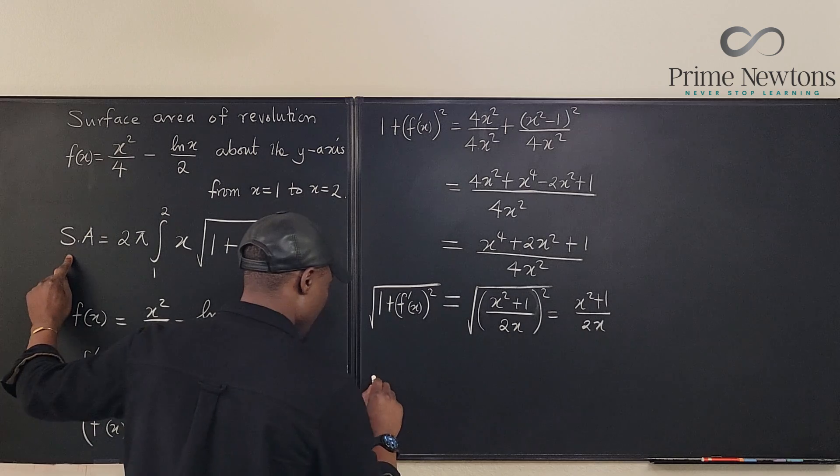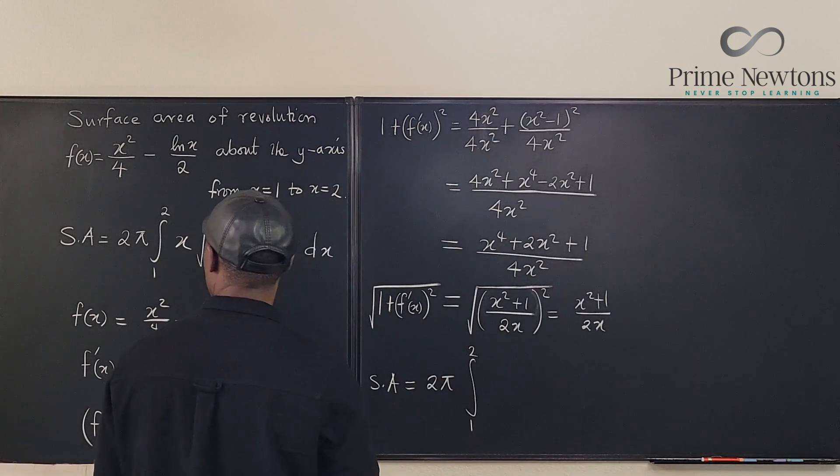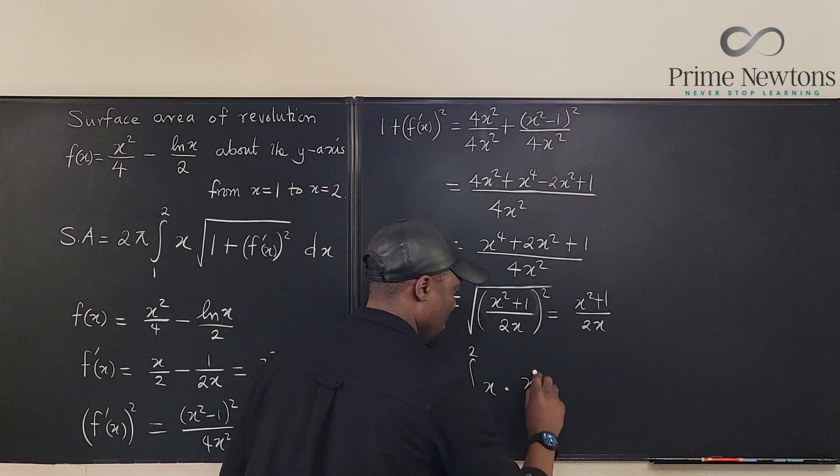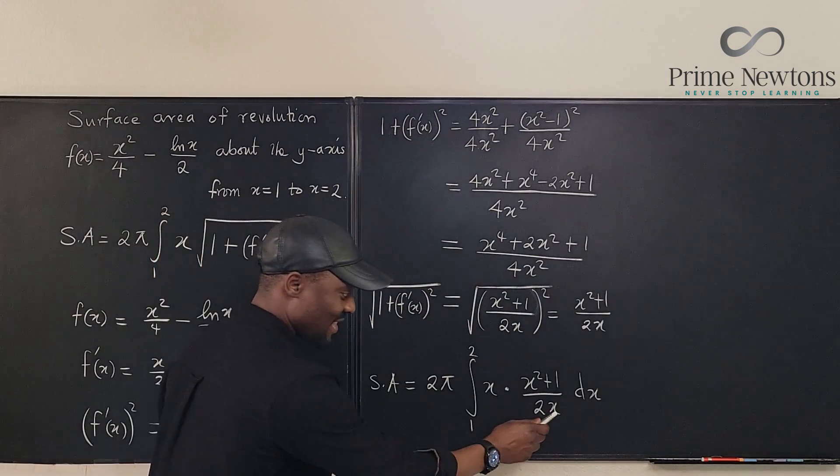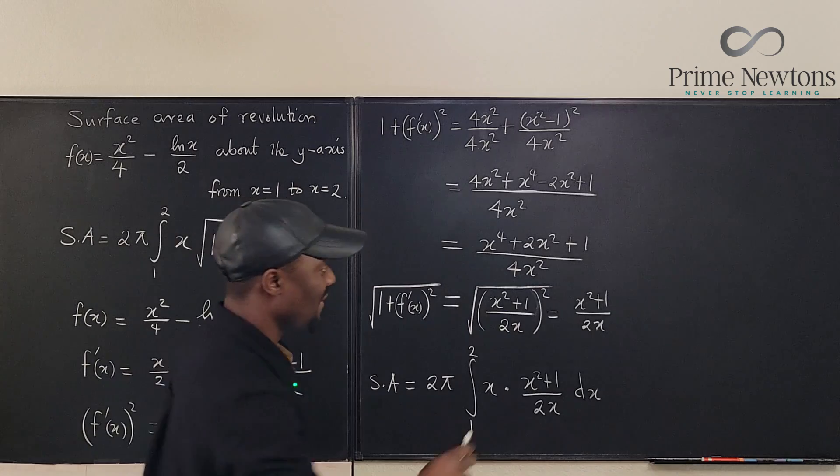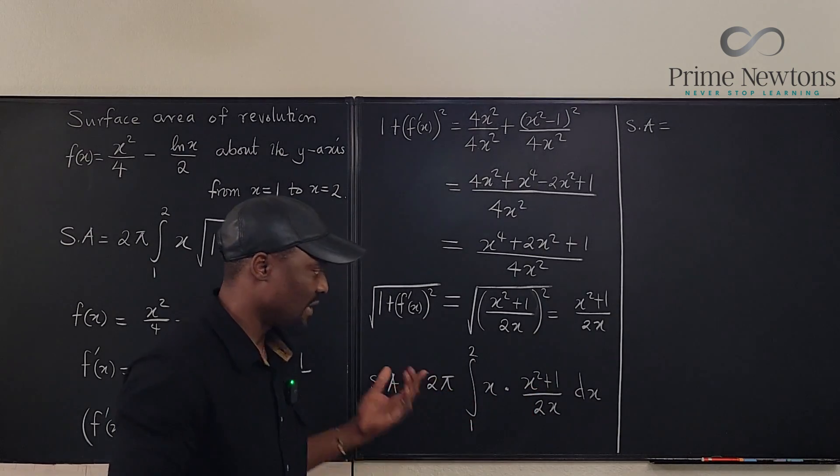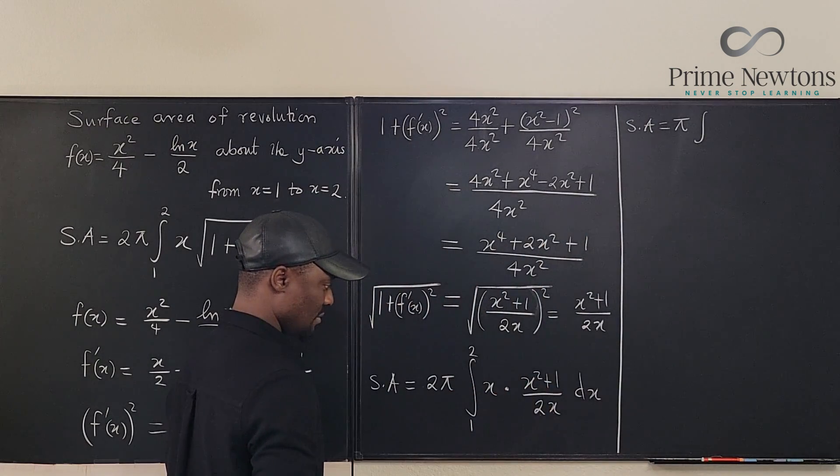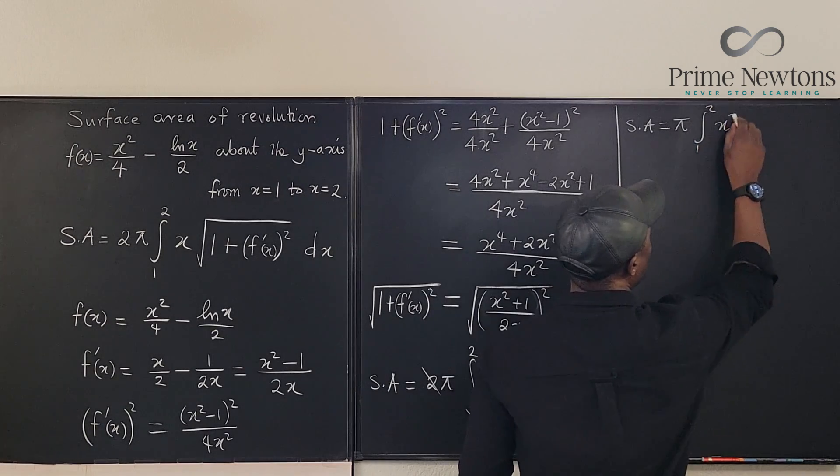So now we know that the surface area, the surface area is equal to 2 pi times the integral from 1 to 2 of x times this. And we already decided that it is going to be this, x squared plus 1 over 2x. See how nicely things cancel out. This guy will cancel this guy. This 2 will cancel this 2. What we have left is just pi. Huh, that's interesting. So the surface area will be equal to, so this cancels this, this cancels this, we have just pi and we have x squared plus 1 dx. We have pi, then we have the integral of just x squared plus 1. Okay, it's just pi and then 1 to 2 of x squared plus 1 dx.